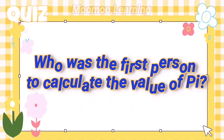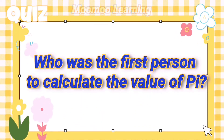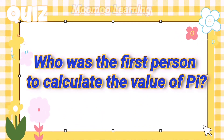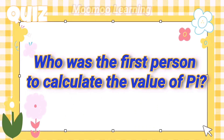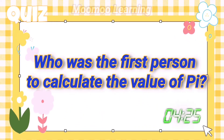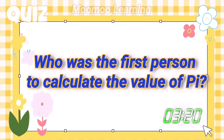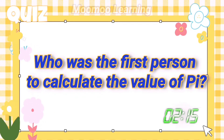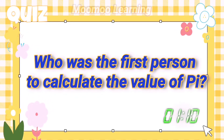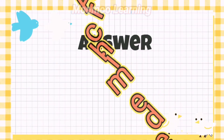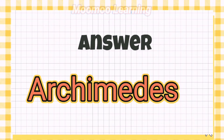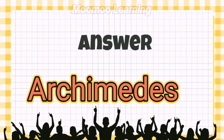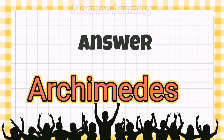Who was the first person to calculate the value of pi? Answer: Archimedes.